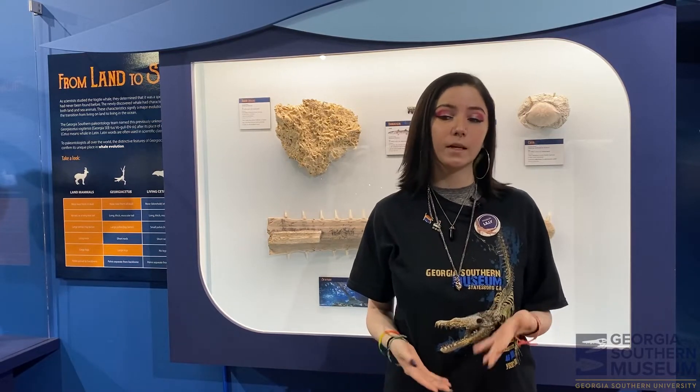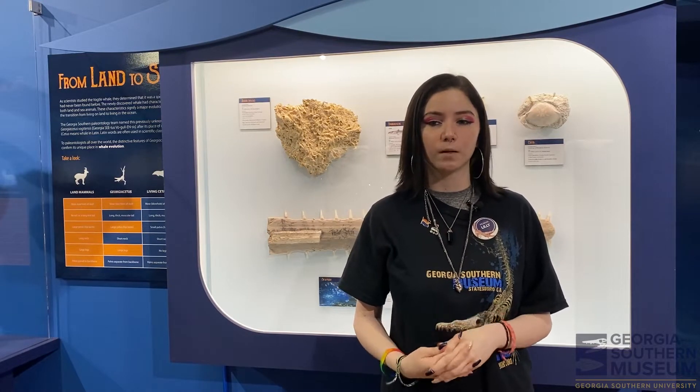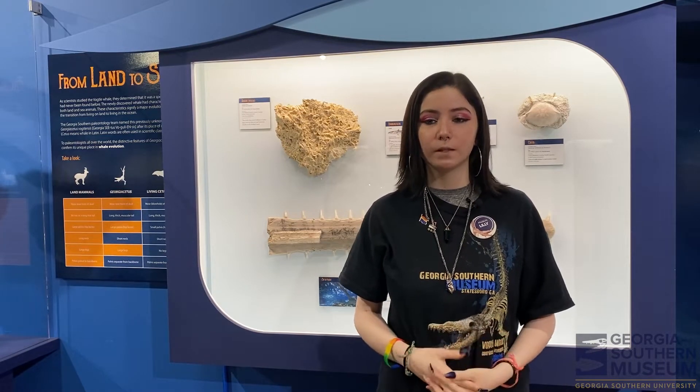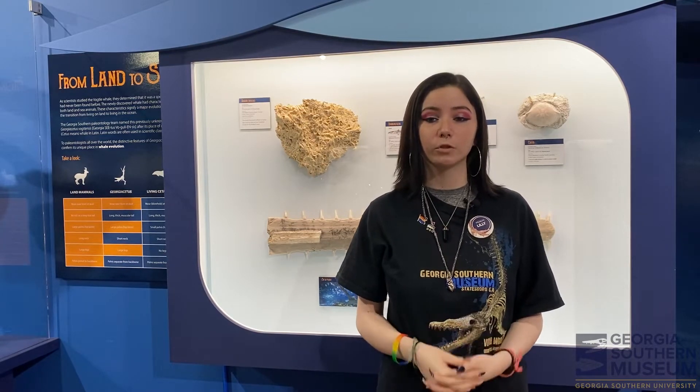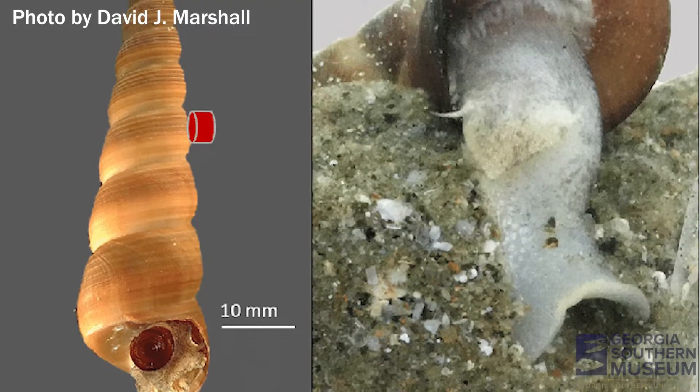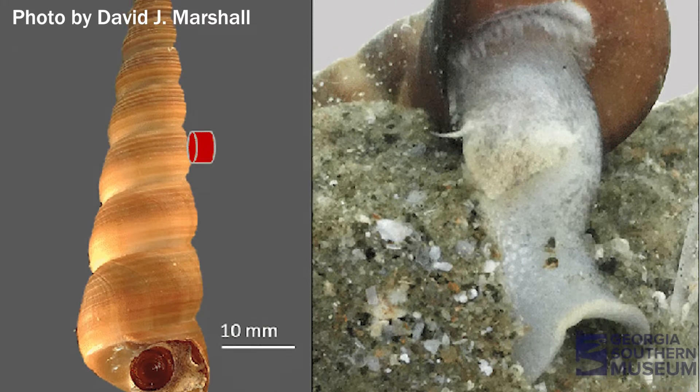You might be wondering what an auger is. They're a type of invertebrate — invertebrates are animals that do not have a backbone. Augers belong to a class of mollusks called gastropoda. Gastropods include snails and slugs, and augers are a type of sea snail. Snails have a single spiral shell into which the whole body can be withdrawn.